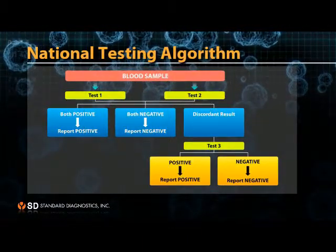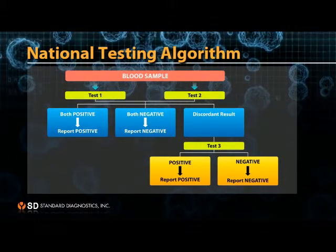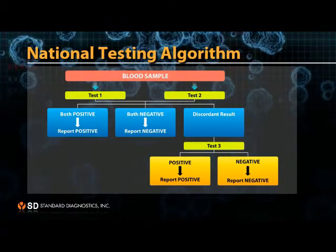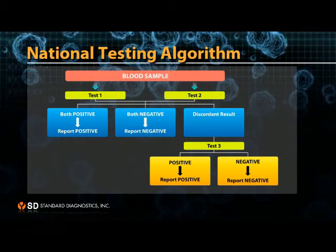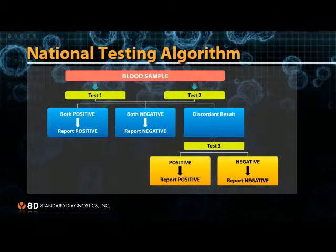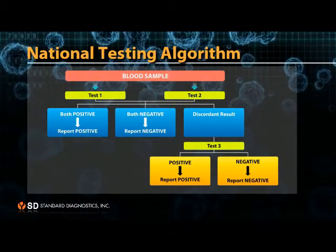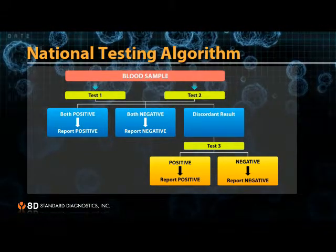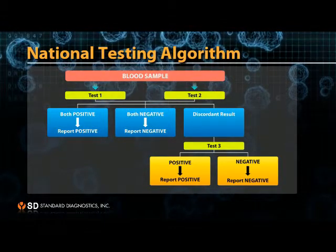WHO recommended that testing algorithms should be developed at the national level using HIV rapid tests. Samples are tested simultaneously by two different tests. When two test results disagree — for example, one is reactive and the other non-reactive — a third test must be performed.